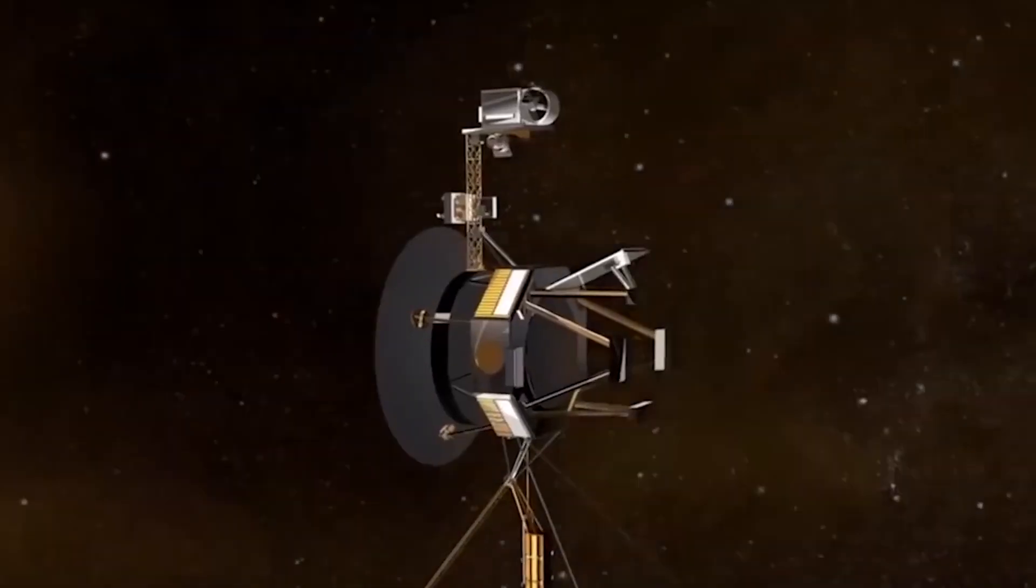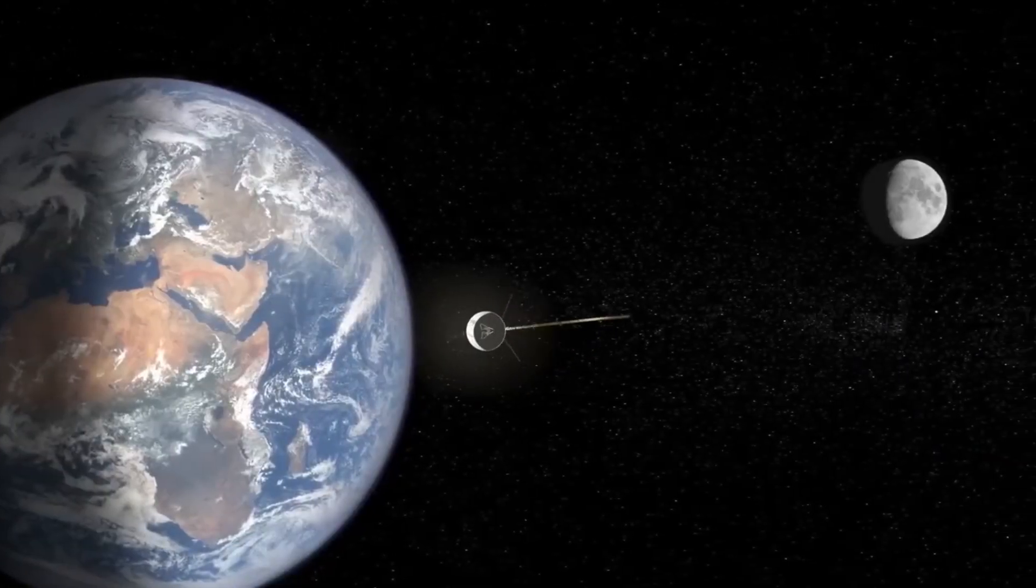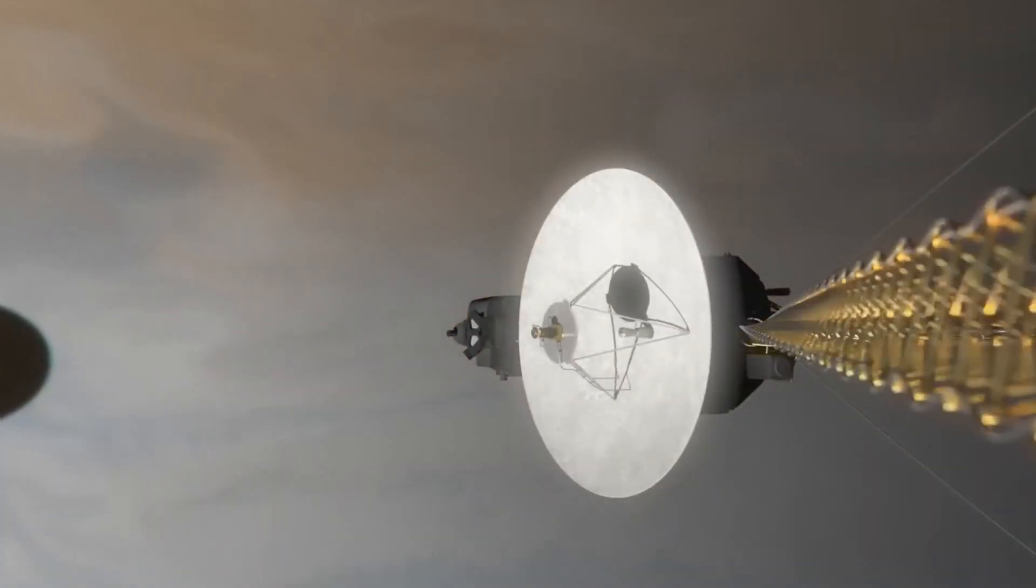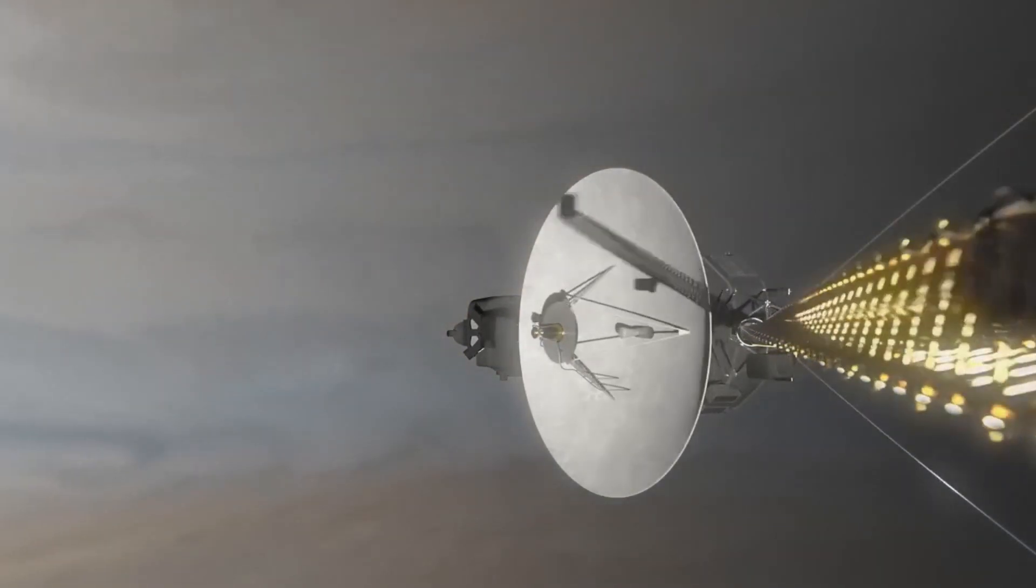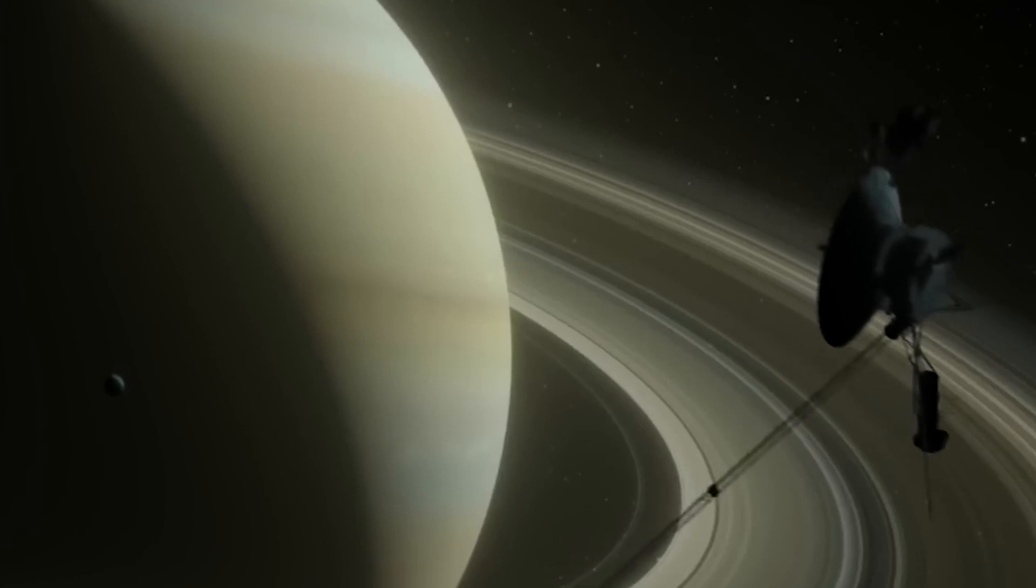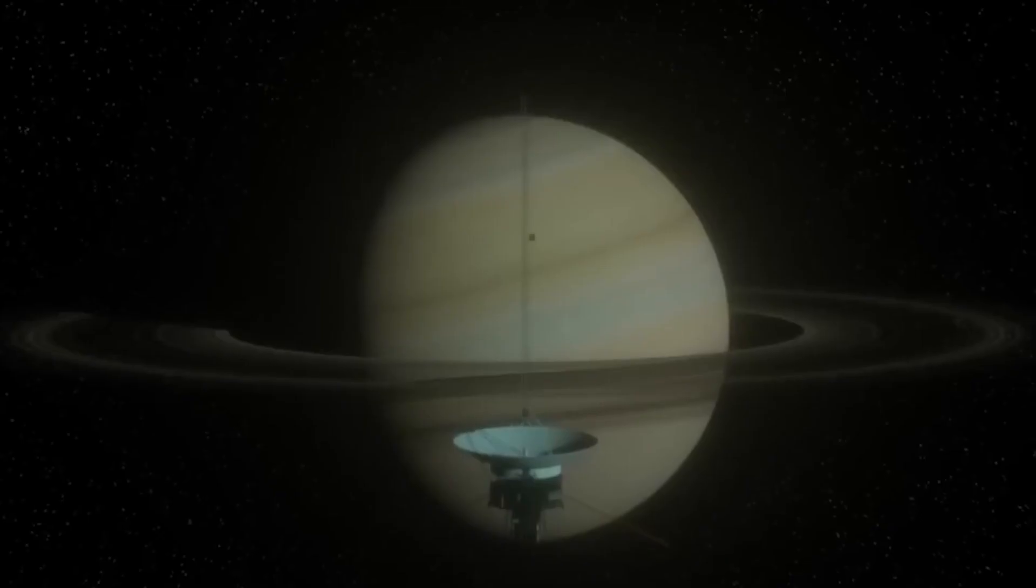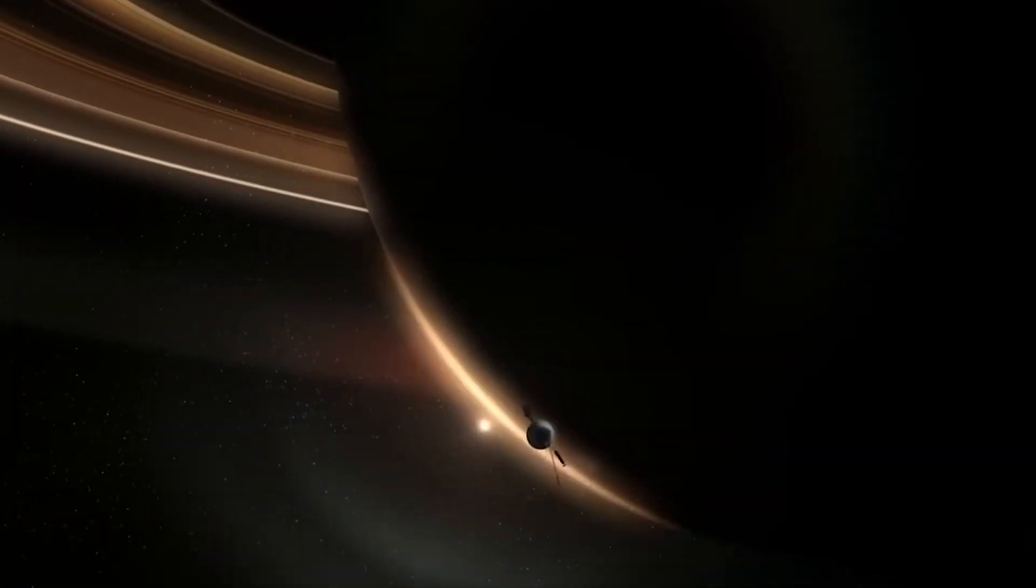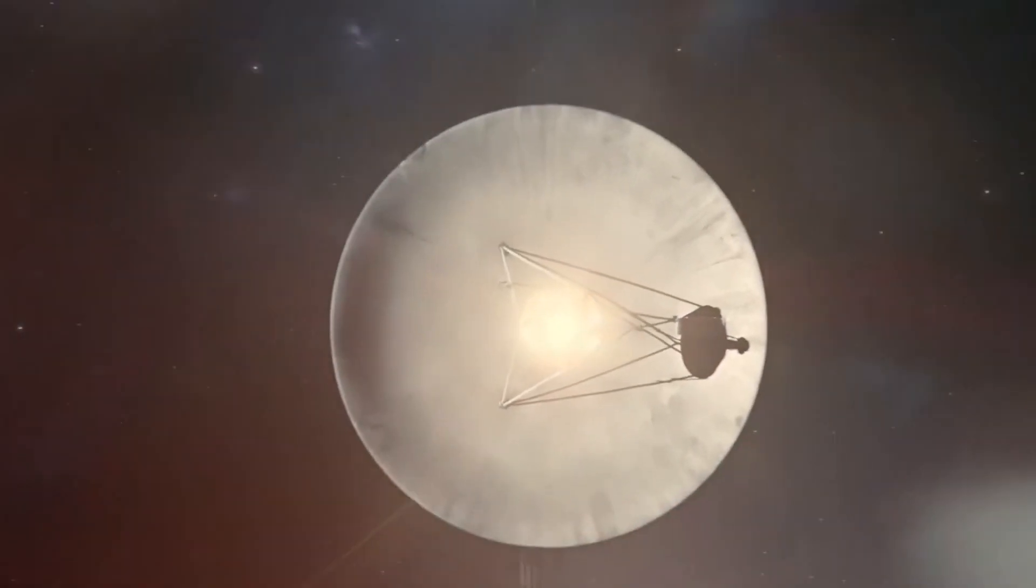The heliopause is the region where the solar wind, a stream of charged particles flowing out from the Sun, meets the interstellar medium, a sea of gas and dust that fills the space between stars. At the heliopause, the solar wind is slowed down by the pressure of the interstellar medium, creating a boundary that separates our solar system from the rest of the galaxy. If Voyager is indeed approaching heliopause, it means that we are entering a completely new and unexplored region of space.